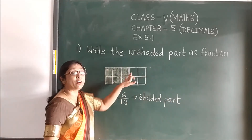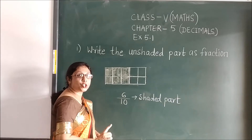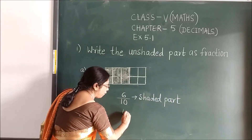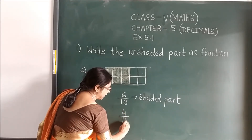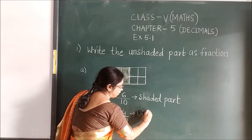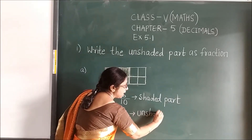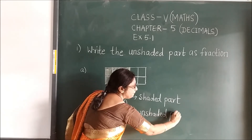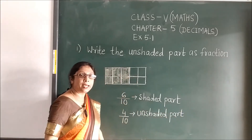And now what is remaining? 4 parts which are not shaded. So we will write 4 upon 10. That is the unshaded part. Clear?